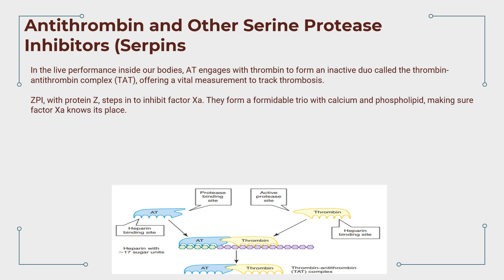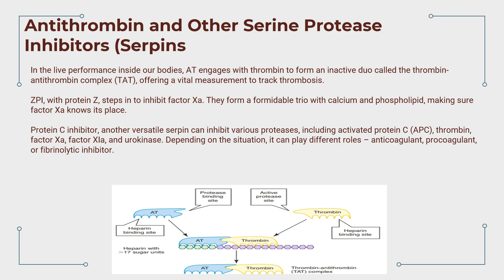ZPI, with its trusty sidekick protein Z, steps in to inhibit factor Xa. They form a formidable trio with calcium and phospholipid, making sure factor Xa knows its place. Protein C inhibitor, another versatile serpin, is a jack-of-all-trades — it can inhibit various proteases, including activated protein C, APC, thrombin, factor Xa, factor XIa, and urokinase.